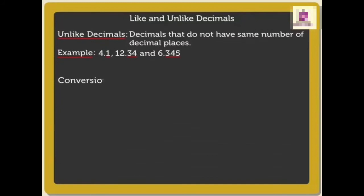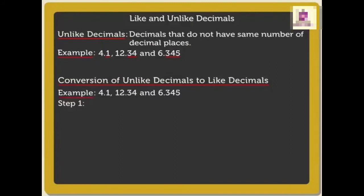So, now the next topic is conversion of unlike decimals to like decimals. For example, 4.1, 12.34, and 6.345. First of all, find the number with the maximum number of decimal places. Here the maximum decimal places is 3.